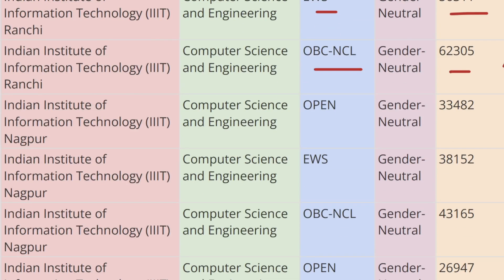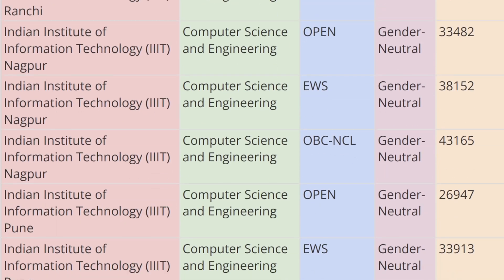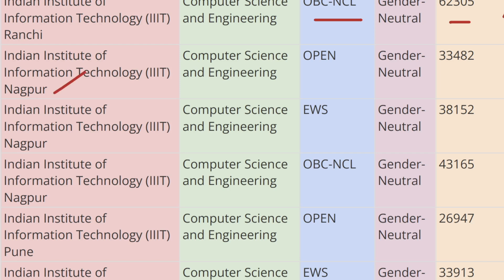Moving ahead, we have IIIT Nagpur. For Open category the cutoff rank is 33,482 for CSAB Round One Computer Science and Engineering closing rank. For EWS category the cutoff rank is 38,152, and for OBC-CL the closing rank is 43,165.